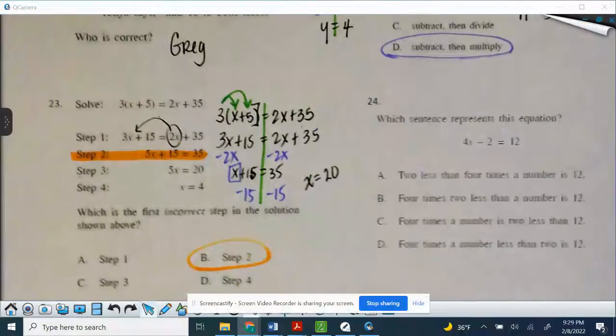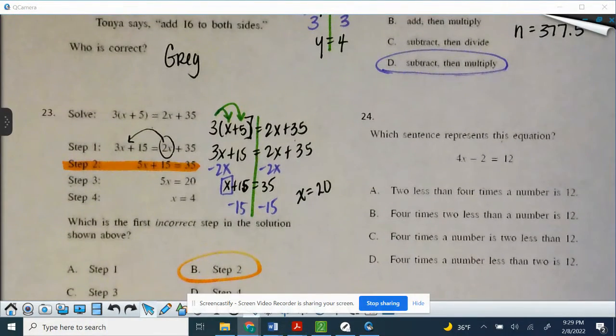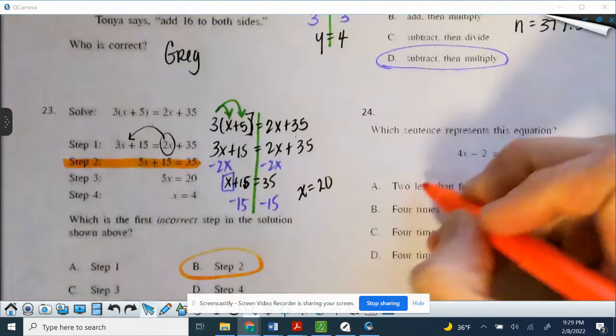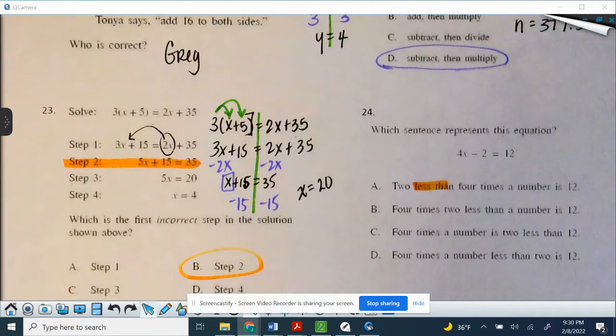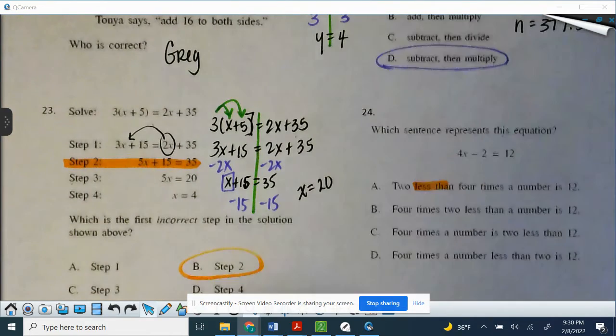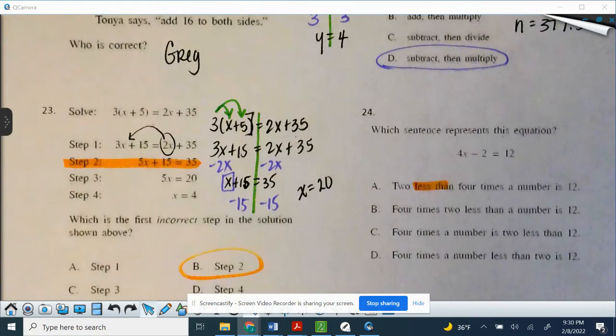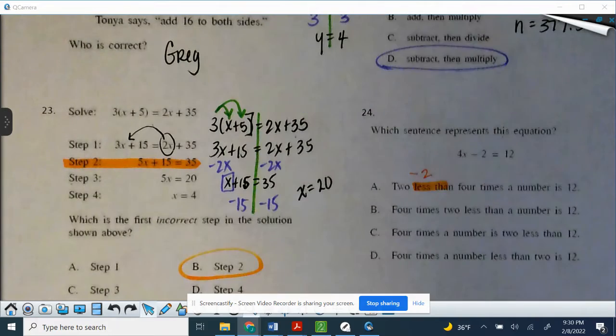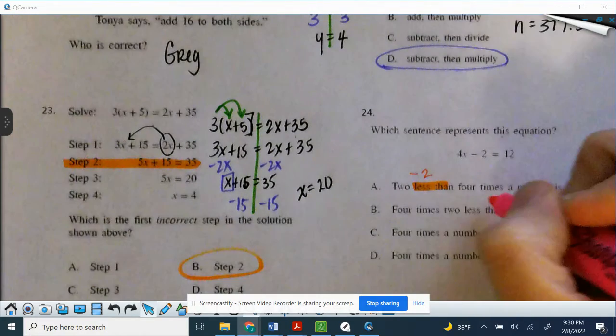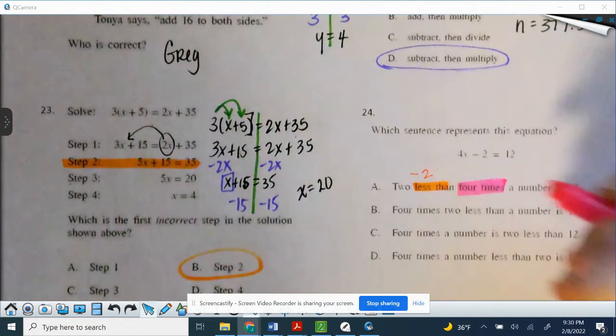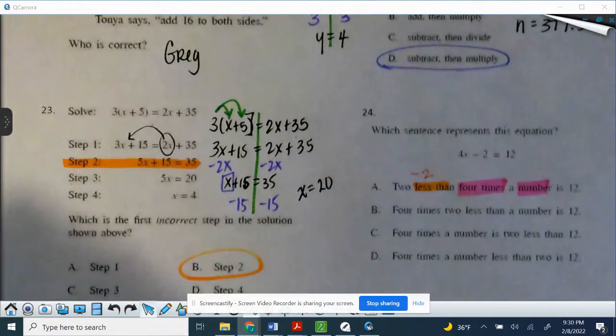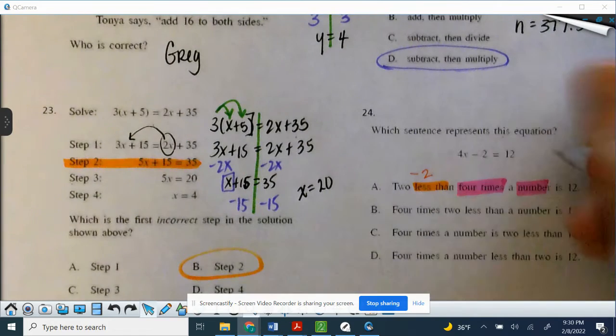So working backwards from our expressions and word problems for number 24, which sentence represents this equation? So 2 less than means it's going to be subtraction, but the 2 is going to come after the subtraction sign. So 2 less than means minus 2, then 4 times a number, so 4x, is, remember we talked about that is equal to, and then we have 12.